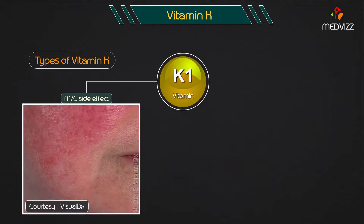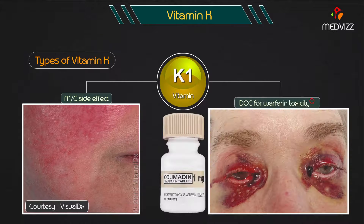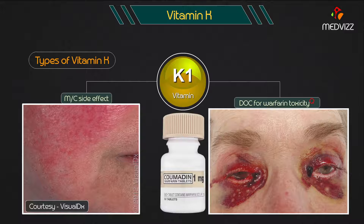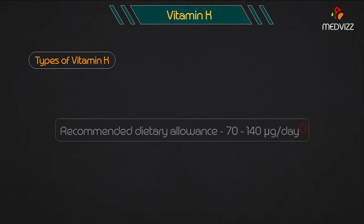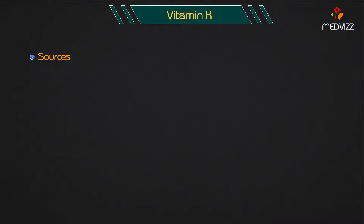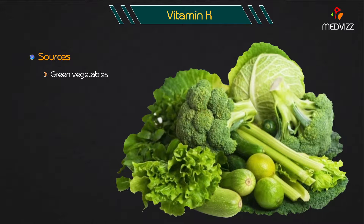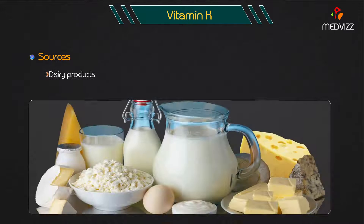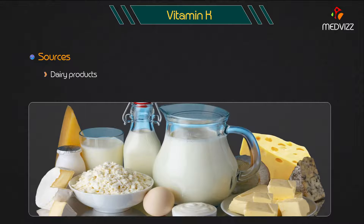Vitamin K1's side effect is flushing, and it is the drug of choice in warfarin toxicity. The recommended dietary allowance is 70–140 micrograms per day. Sources include green leafy vegetables and dairy products.